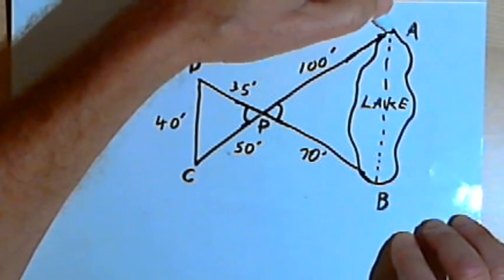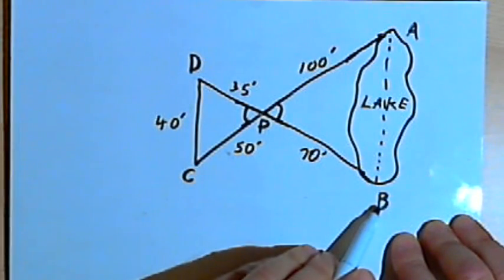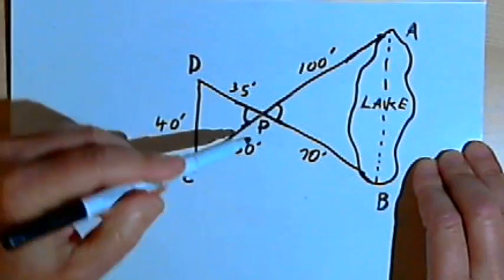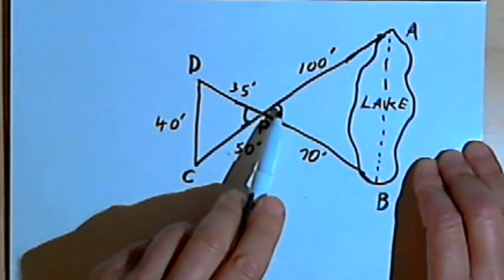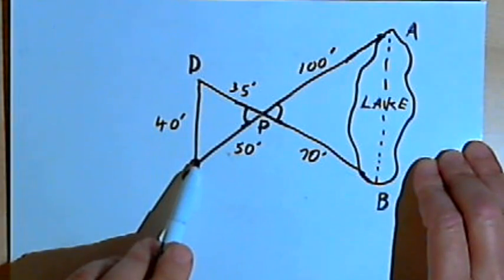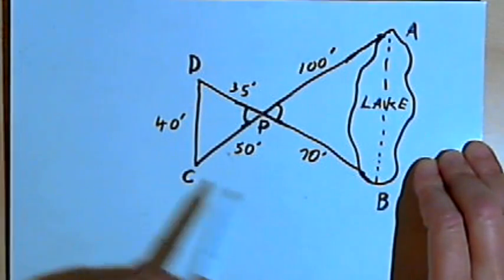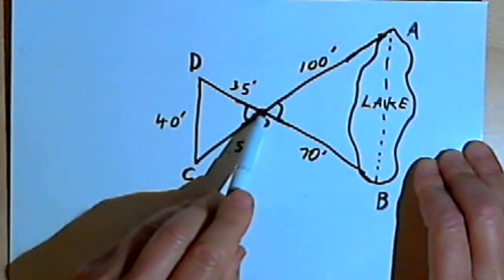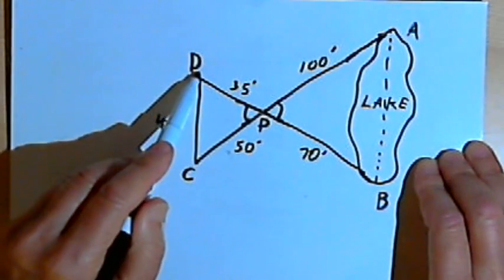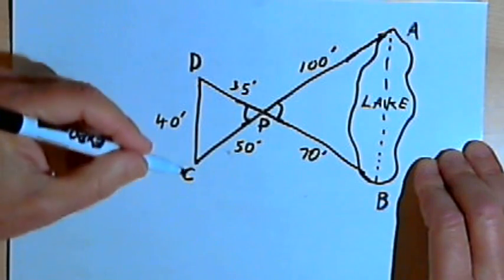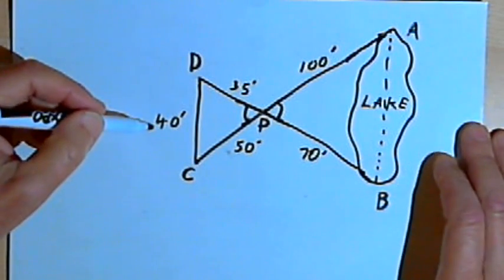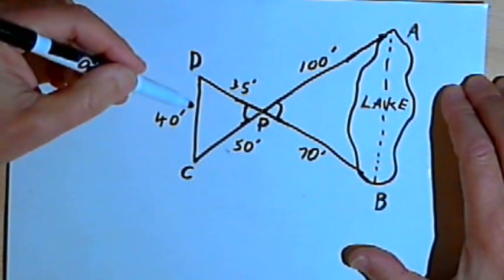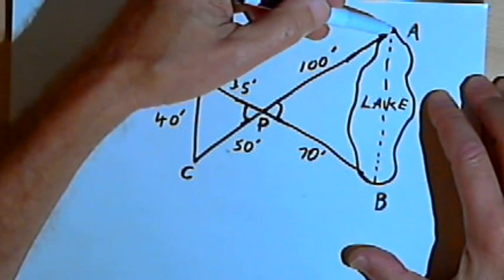I'm going to call one end of the lake A and the other end B. Starting at point A, you walk 100 feet to some point which we'll call point P, and then continue walking 50 feet more to a point we'll call C. You go over to the other end of the lake, point B, walk 70 feet until you get to point P, and then walk 35 feet more to point D. You measure the distance from C to D, and that's 40 feet. If we can show that we have similar triangles, we can use these measurements to find the length of the lake from A to B.